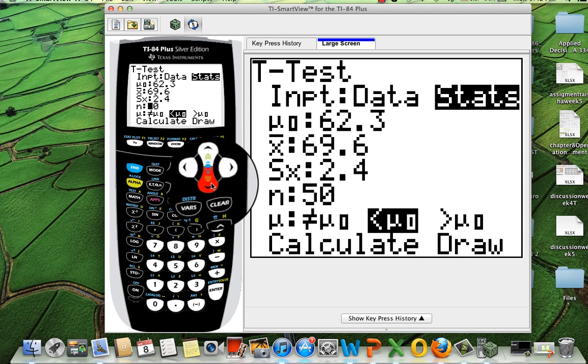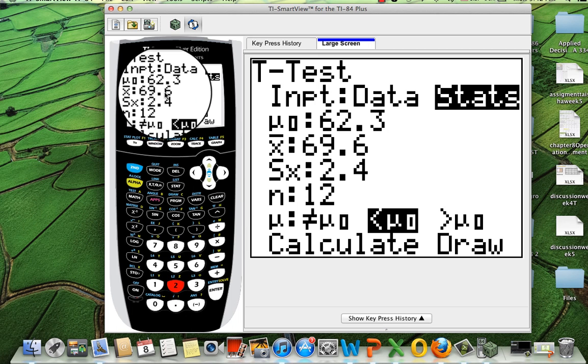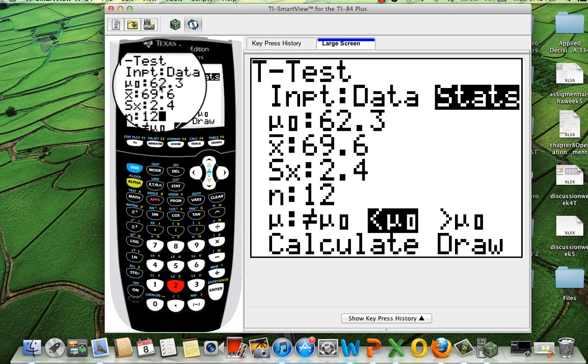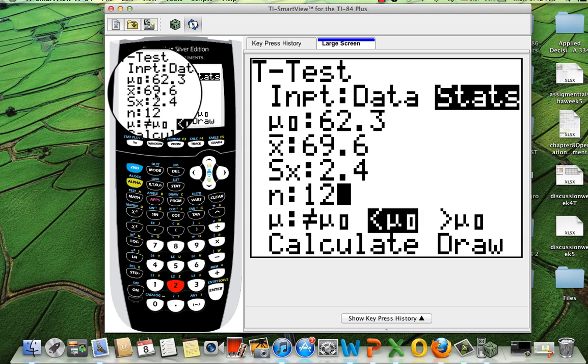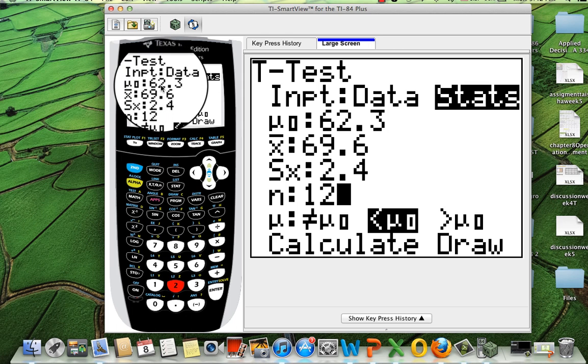A lot of students ask me, how do I know which one is who? Like, which one is the claim and which one is the x-bar? Remember, the x-bar is the one that the problem gives you that they grabbed the people and they were testing it. The mu is gonna be the claim.